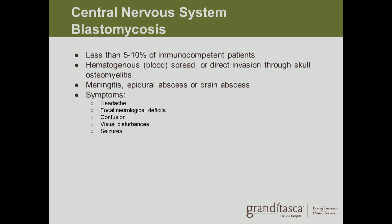Central nervous system blastomycosis occurs in less than 5 to 10 percent of immunocompetent patients. It is usually due to blood spread or direct invasion through skull osteomyelitis — a bone infection. It can present like meningitis, epidural abscesses, or brain abscesses. Symptoms include headache, focal neurological deficits, confusion, visual disturbance, and seizures.